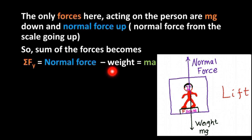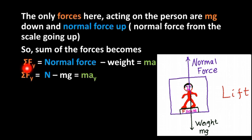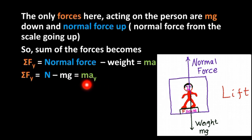Normal force minus weight equals mass times acceleration. The sum of forces on the Y axis is equal to normal force N minus weight, which equals mass times acceleration in the Y direction.